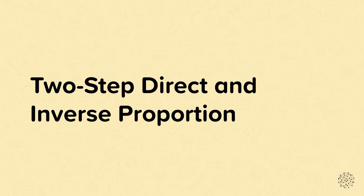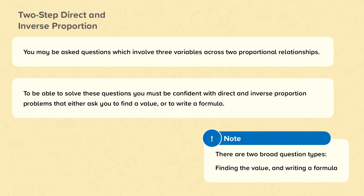Two-step direct and inverse proportion. In these questions there are three variables with two different proportional relationships, and one of the variables will appear in both relationships. So for example, you'll have a relationship between A and B, and B and C, and you'll be asked to find a link between A and C. These questions are challenging — you must be confident with direct and inverse proportion problems before completing these question types. There are two broad question types: finding the value, or writing a formula that links the variables.